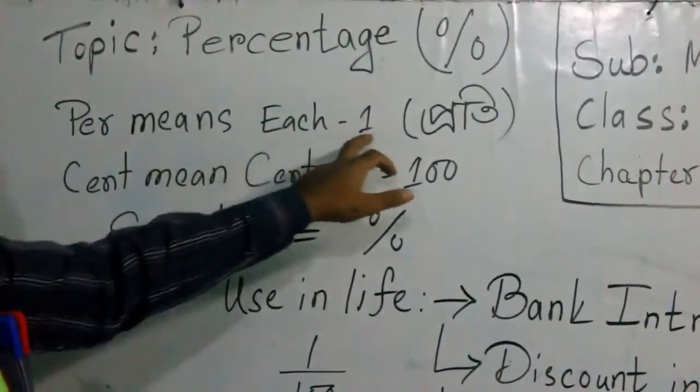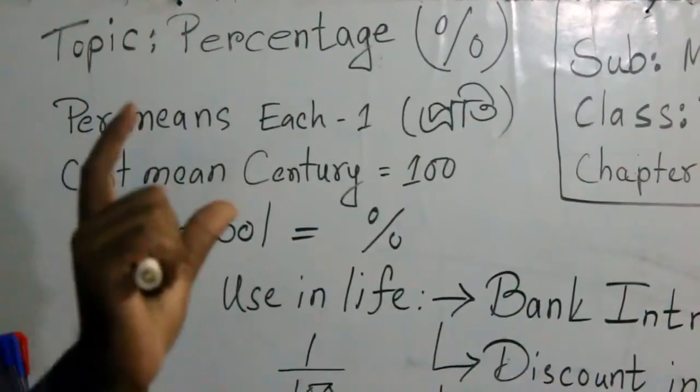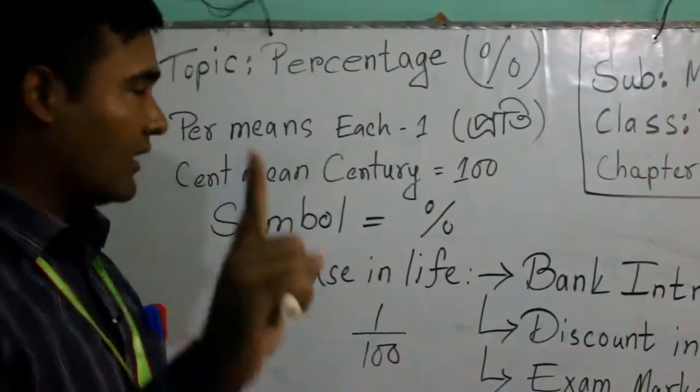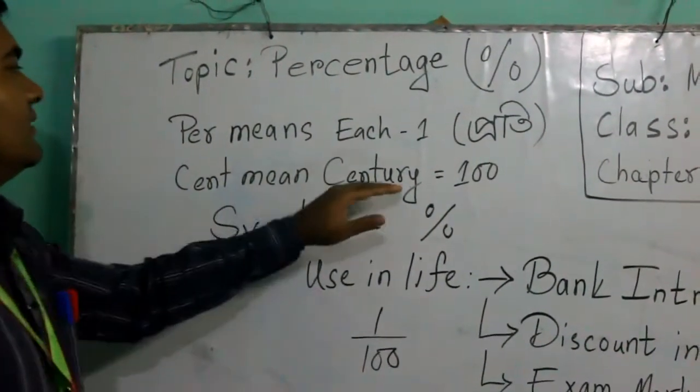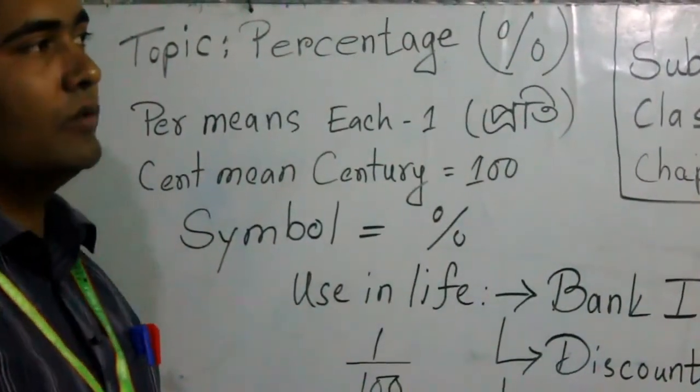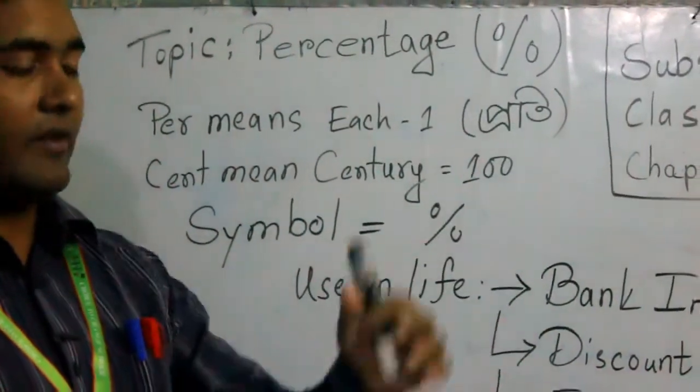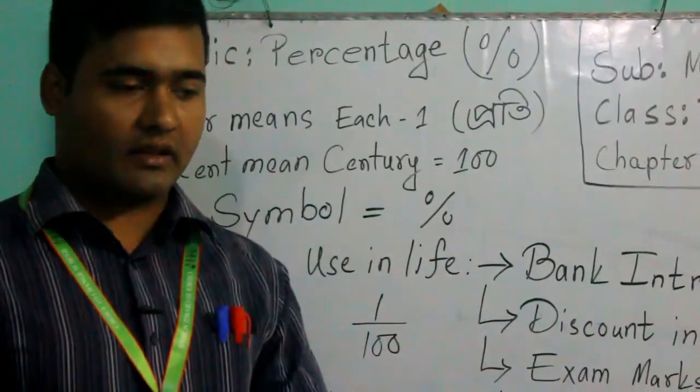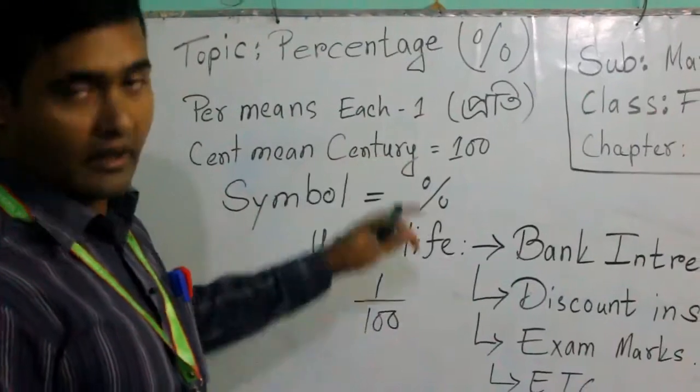Per means each, that means one, and cent means century, that means hundred. As you know in cricket, after someone does hundred runs they call it century, right?